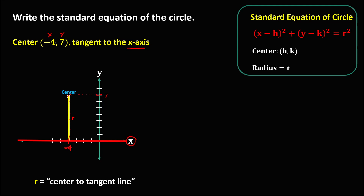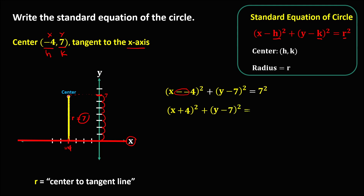To find the value of the radius, we count at the opposite side: 1, 2, 3, 4, 5, 6, 7 — so the radius is equal to 7. Writing the standard equation with h is negative 4, k is positive 7, and r is 7: (x minus (−4))² + (y minus 7)² = 7². The double negative becomes positive: (x + 4)² + (y − 7)² = 49. This is the standard equation of the circle.